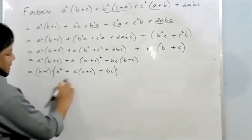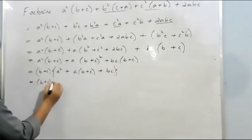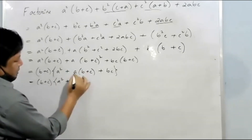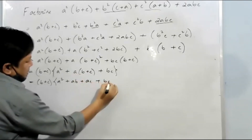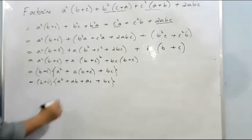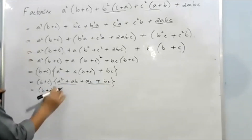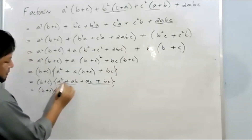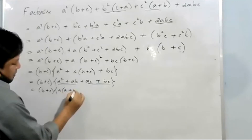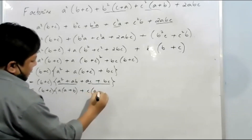From this step, we need to rearrange and multiply again. We get: (b + c) times [a² + a(b + c) + bc]. Now let's find the common from this bracket. A is common in the first two terms: a(a + b). And c is common in the last two terms: c(a + b).